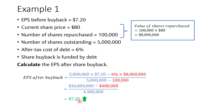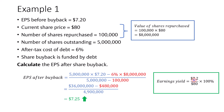Why is there an increase in the EPS after the buyback? If we look at the company's earnings yield before the share buyback — which is the EPS of $7.20 divided by the current share price — that is about 9%, and this earnings yield is greater than the after-tax cost of debt. In the case where the earnings yield is greater than the after-tax cost of debt, the EPS will increase after the share buyback.